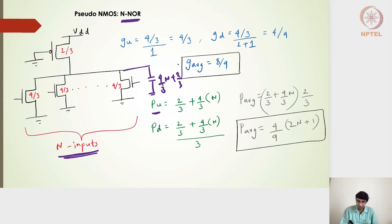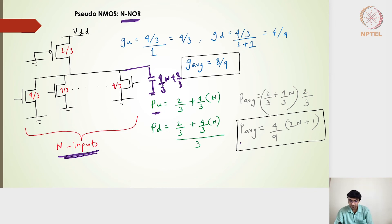The parasitics do change with n inputs. The output node capacitance is (4n/3 + 2/3). The normalized parasitic for going up is (4n/3 + 2/3) ÷ 1 = 2/3 + 4n/3. The normalized parasitic for going down is (4n/3 + 2/3) ÷ 3. The average turns out to be (4/9)·(2n + 1).